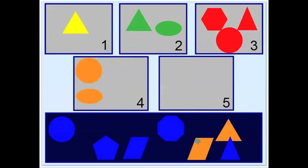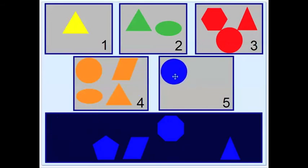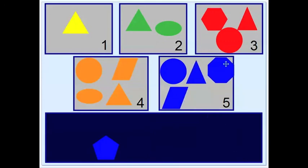One, two, three, four. And then we can move the five blue shapes. One, two, three, four, five.